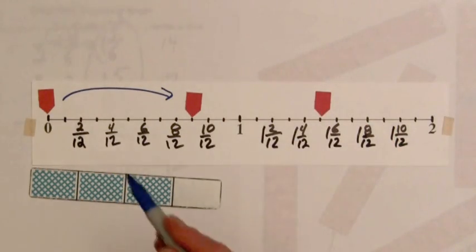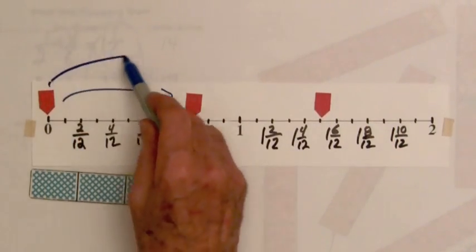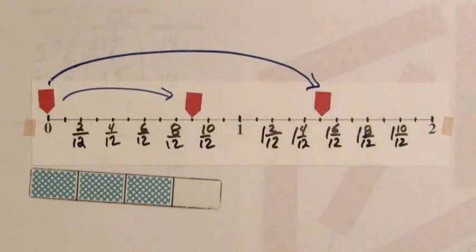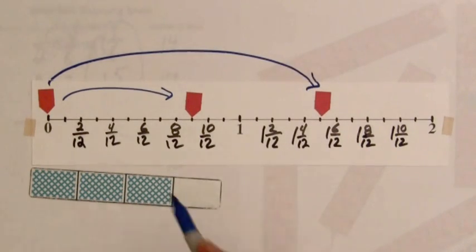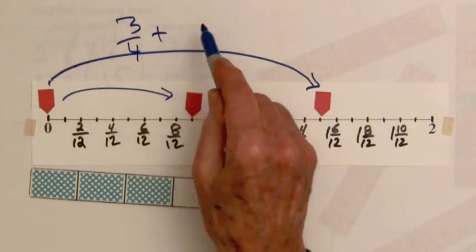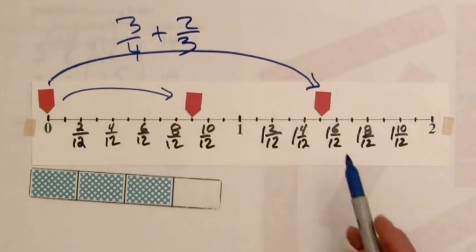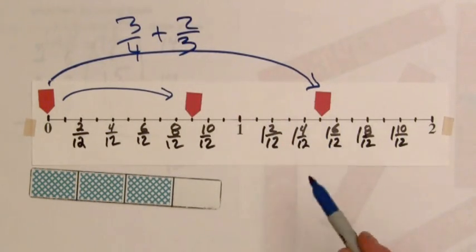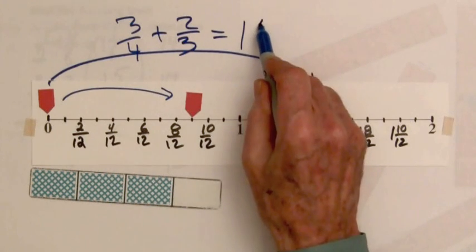So the total, they move from here over to here. So they've got three-fourths plus two-thirds equals one and five-twelfths.